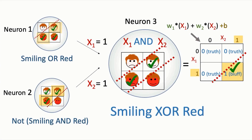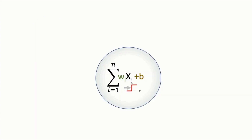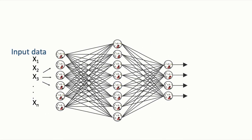This is the end of our lecture on how a 3-neuron network can be used to solve a non-linearly separable XOR problem, giving intuition for how multi-neuron networks combine the computations of single neurons to solve more complicated problems. In the next lecture, we'll introduce the Universal Approximation Theorem — a theorem stating that a multi-neuron network can theoretically represent any continuous function, and therefore find the most complicated decision boundaries needed to make predictions. I'll also show an intuitive proof of why this is the case.